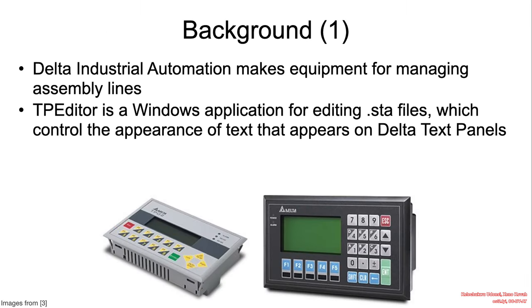Dell Industrial Automation makes equipment for managing assembly lines. The equipment relies on a TP editor, which is an application for making STF files that determine what text would look like when displayed on the delta text panels.